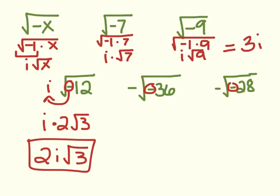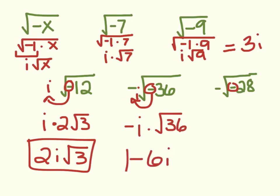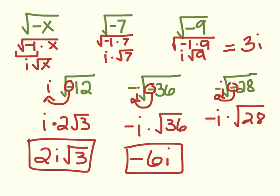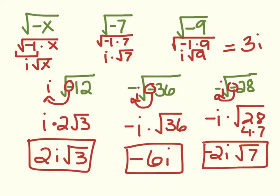Negative square root of negative 36 — a lot of people think these negatives cancel out, but they do not. One is on the outside, one is on the inside. The one on the inside becomes i, so we've got negative i times the square root of 36, which is 6, so this becomes negative 6i. And here we've got negative square root of negative 28 — same thing, the negatives do not cancel out. This one becomes i, so we have negative i times the square root of 28. We can break down the square root of 28 because that's 4 times 7, so that becomes negative 2i root 7. Always remember: if you see a negative under the radical sign, pull it out and turn it into the letter i.